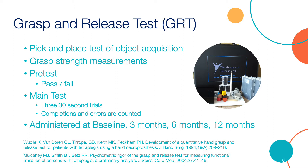The pretest assesses whether the participant can acquire and release each object and is scored as either pass or fail. The main test includes three test trials for each object successfully passed in the pretest. Each trial lasts 30 seconds, during which completions and errors are counted.